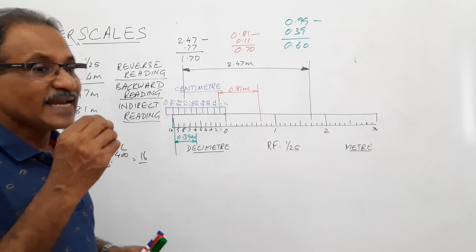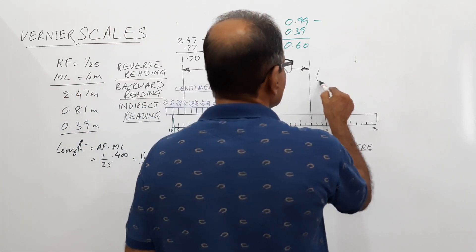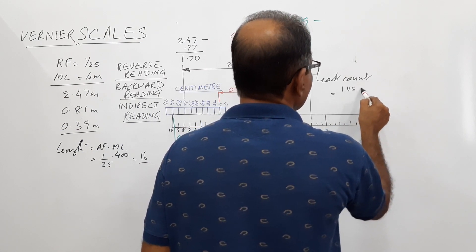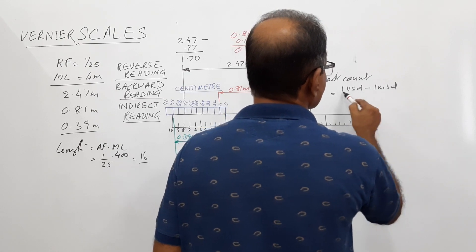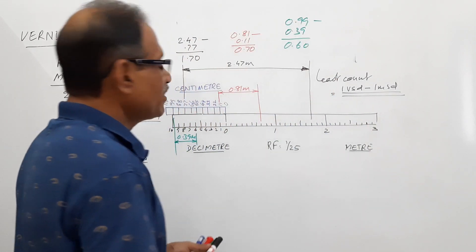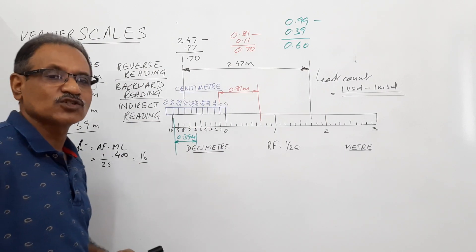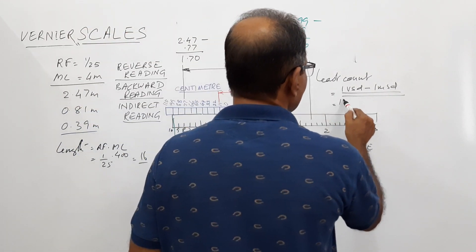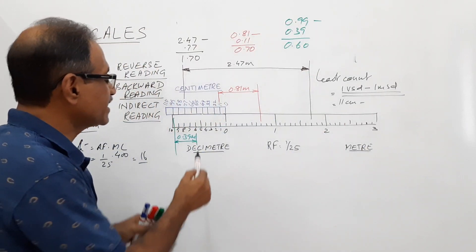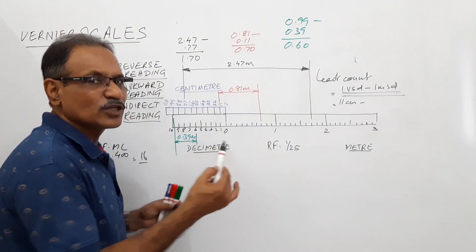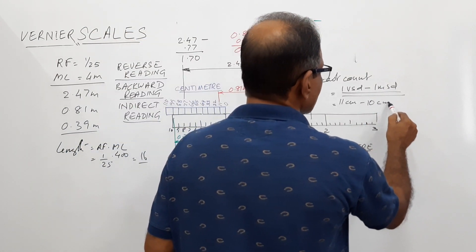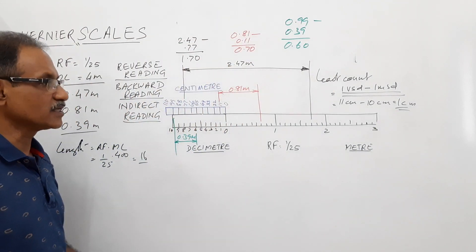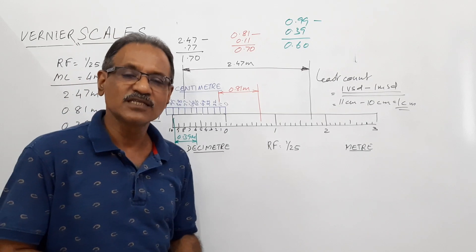One thing I would like to point out is the least count of the scale. Least count equals 1 vernier scale division minus 1 main scale division. Here, 1 vernier scale division is 11 cm and 1 main scale division is 1 decimeter, which equals 10 cm. So the least count is 11 cm minus 10 cm, which is 1 cm.